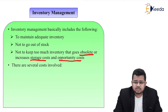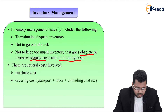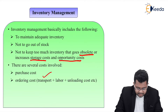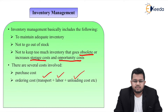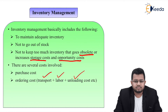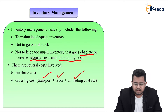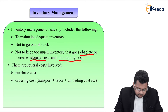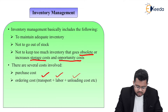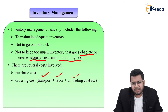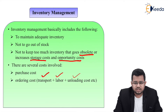There are several costs involved whenever you are managing inventory. The first is the purchase cost. The second is the ordering cost, which includes transport, labour, and unloading costs. Whenever you purchase materials, there will be transport costs, and you might need labour to install or set up the goods. These are incidental expenses over and above the purchase cost that are necessary to bring raw materials to the factory.